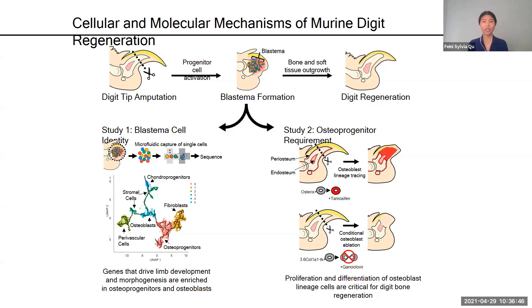Since bone formation is crucial for digit regeneration, I hypothesize that limb outgrowth is driven primarily by osteoblast lineage cells. To test this, I surveyed the identities and gene profiles of all the blastema cells. While multiple mesenchymal cell types contributed to regeneration, I noticed that osteoprogenitors and osteoblasts express genes known to drive embryonic limb development and morphogenesis, suggesting that, in addition to making new bone, they might also help re-establish the proper limb pattern.